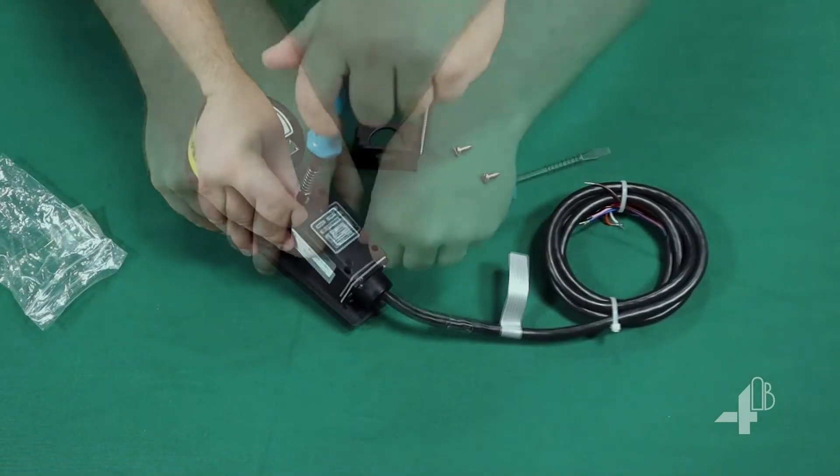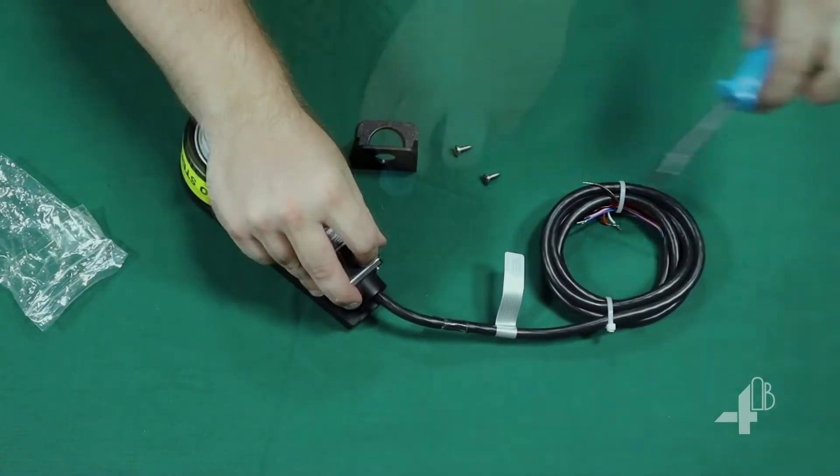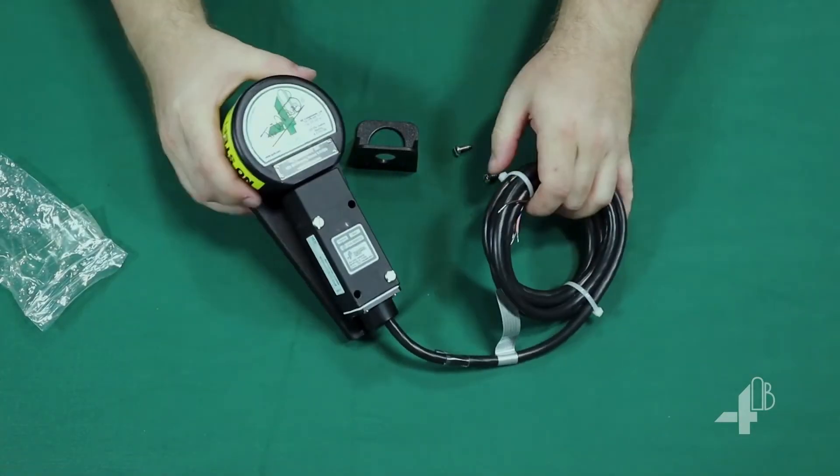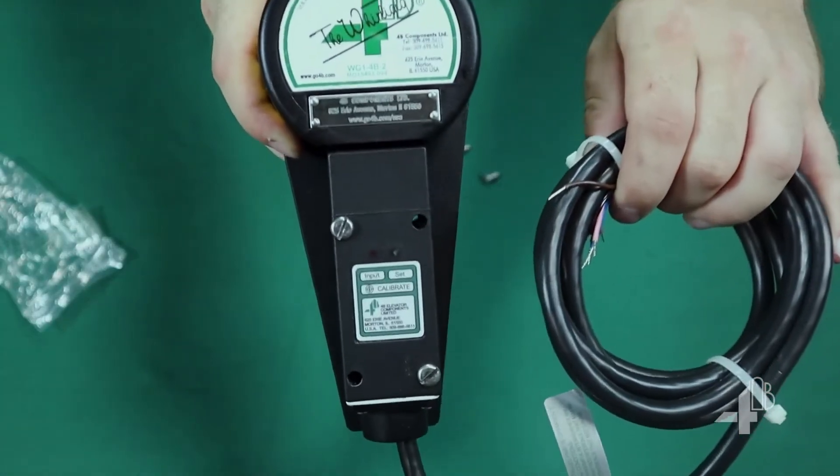Using the provided screws, mount the M800 onto the Whirligig, placing the sensor detection face close to the target guard. You'll want about the width of a credit card in between.